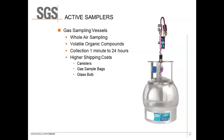Gas sample bags offer another option for whole-air collection. There are a variety of bags available for collecting gas samples — a little more convenient in terms of bulk — but they have drawbacks including shorter holding times and difficulty shipping by air due to pressure differentials in flight. You cannot collect a completely full sample into the bag; you have to leave room so that when it goes up in an airplane at a different pressure, the sample bag can expand without bursting. There are also glass bulbs available for collecting into a glass container.